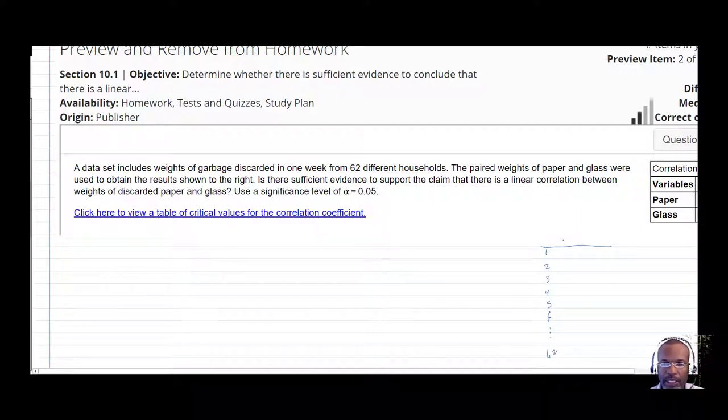And then in each of those households, they looked at the weights of paper versus glass. So what was the total amount of paper that was discarded for the week and the total amount of glass that was discarded? Each one of these numbers represented a different household. So what you end up with is numbers for paper on one axis and the other one for glass. Then you take each one of those and plot those weights as an x, y coordinate pair.